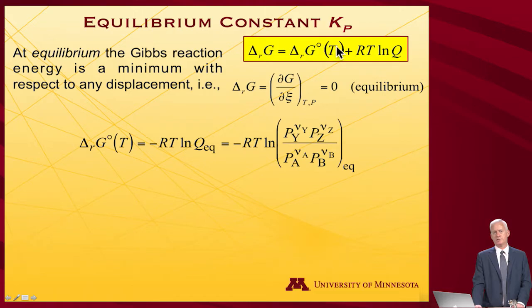At equilibrium the Gibbs reaction energy is going to be at a minimum with respect to any displacement. The change in the free energy with respect to the extent of reaction, which is to say shifting left or right, would raise the free energy. You're at the bottom of a well if you're at equilibrium, so that derivative at the bottom of the well is zero.